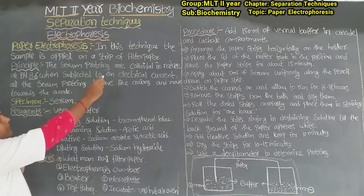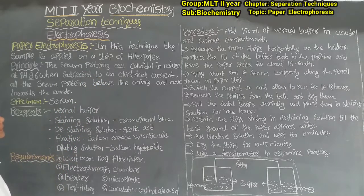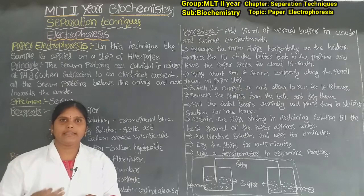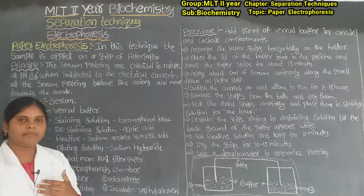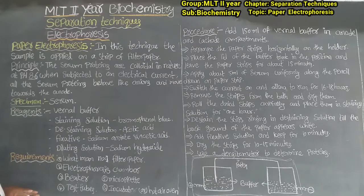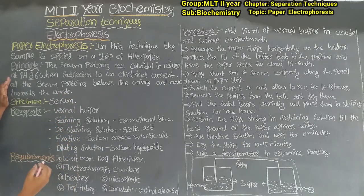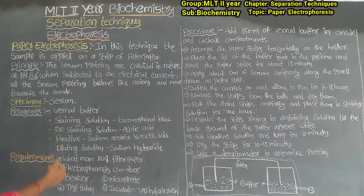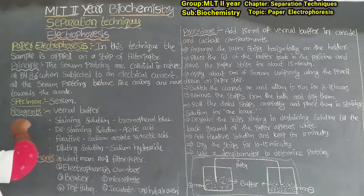In paper electrophoresis, in this technique, the sample is applied on a strip of filter paper. We use the paper to identify the proteins. The principle: serum proteins are colloidal in nature at pH 8.6. When subjected to an electrical current, all the serum proteins behave like anions and move towards the anode.